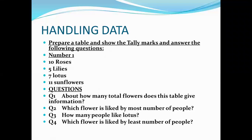For handling data, you have to prepare a table and show the tally marks and answer the following questions. The first sum is: you've got 10 roses, 5 leaves, 7 lotus, and 11 sunflowers. You will make a table with the name of the flower, the second column as tally marks, and the third column as total number of flowers. Then draw the tally marks as per the numbers given.